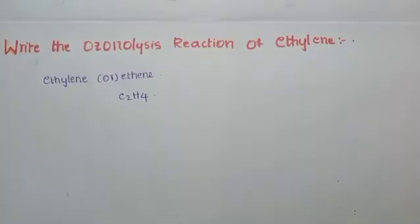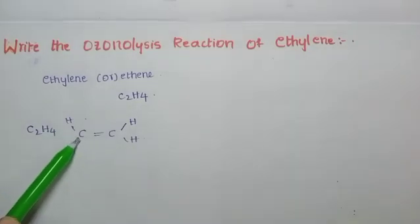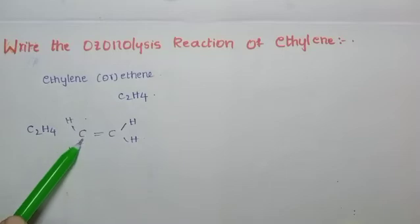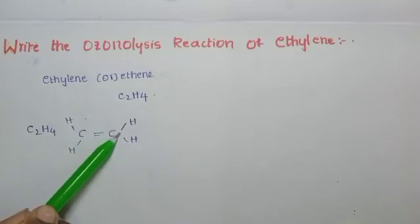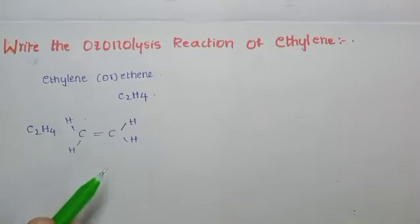Ozonolysis is nothing but using ozone to get the product. Now, how to write C2H4 in structure — we balance the carbon valency of 4: 1, 2, 3, 4. And the underside of the carbon is also 1, 2, 3, 4.